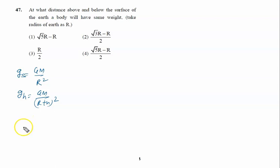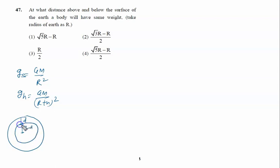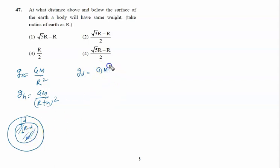Now, gravity at any depth d: suppose this is the earth of radius R and we are moving at a depth d. The distance remaining from the center of the earth is written as R minus d. At this point, only the shaded mass is responsible for gravity. So gravity at any depth d is written as g_d equal to G times M dash upon (R minus d) whole square.